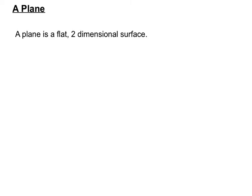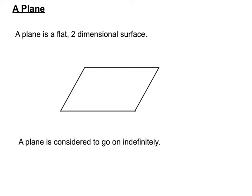Now a plane. A plane is a flat two-dimensional surface, like a sheet of paper. But a plane in geometry is considered to go on indefinitely in all four directions as well, as indicated by the red arrows. So it's like a big sheet of paper that never ends.